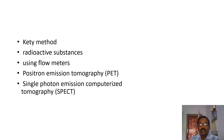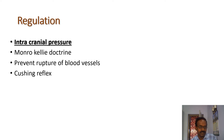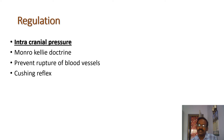Positron emission tomography (PET) and single photon emission computerized tomography (SPECT) are also used to measure cerebral blood flow using scintillators. Regarding regulation: intracranial pressure — within the cranial cavity, brain tissue, cerebrospinal fluid, and blood volume are all constant. If one thing changes, it alters the others — this is the Monroe-Kellie doctrine. If CSF pressure increases, it compresses the brain and reduces blood flow. In brain tumors and raised intracranial pressure, blood flow decreases.